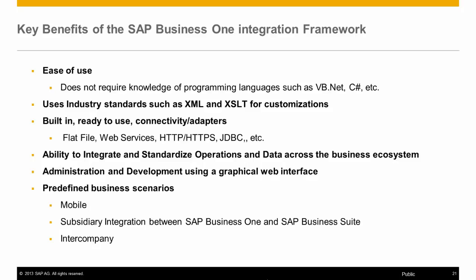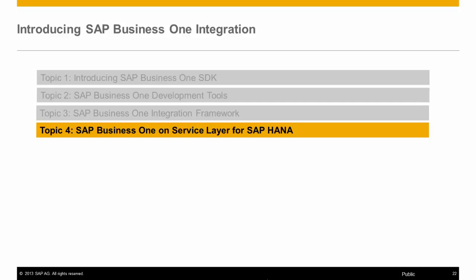The key benefits of the SAP Business One Integration Framework include ease of use — no knowledge of programming languages such as VB.NET, C#, or Java is required. It uses industry standards such as XML and XSLT for customizations, and has built-in ready-to-use connectivity types such as flat file, web services, and HTTP. It provides the ability to integrate and standardize operations across the business ecosystem, administration and development via a graphical web interface, and predefined out-of-the-box business scenarios such as mobile, subsidiary integration between SAP Business One and SAP Business Suite, and intercompany transaction processing.